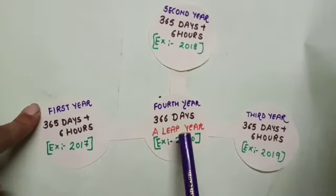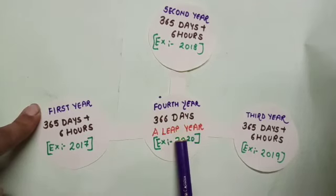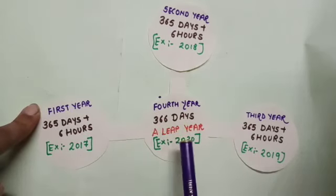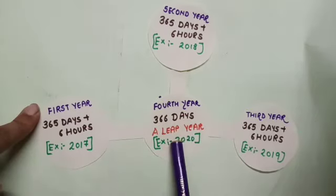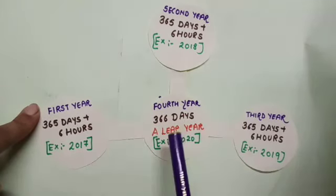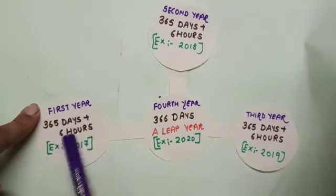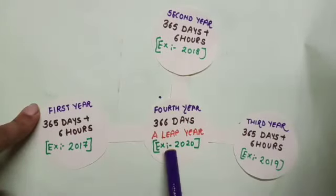So in a leap year, February has 29 days instead of 28 days. All other months are either 30 or 31 days. The change is only in the February month — it is either 28 days or 29 days.